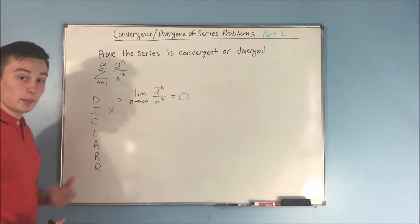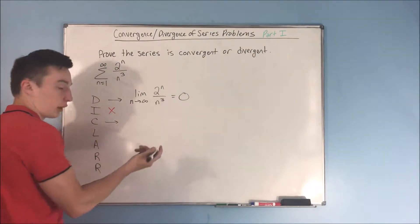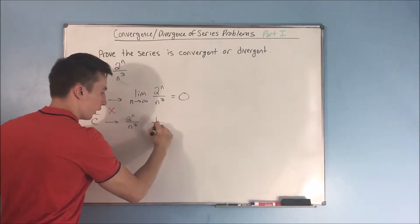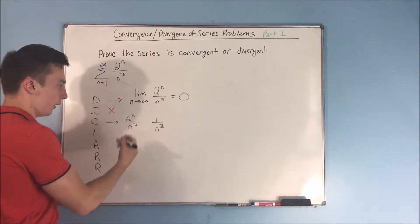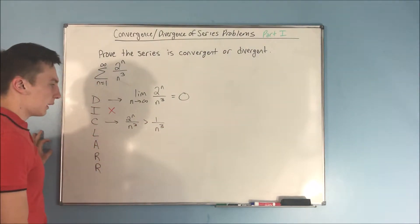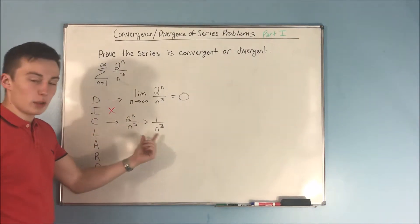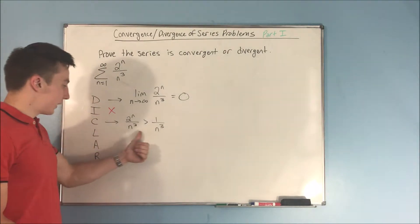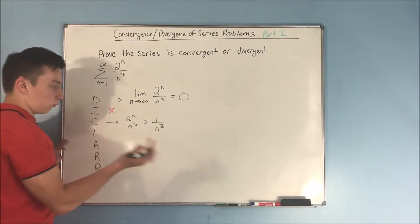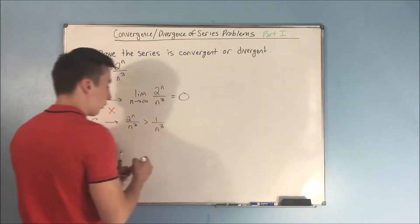Could we do a comparison test? If we were going to compare it to anything, it would be to the p-series 1 over n cubed. We have 2 to the n over n cubed compared to 1 over n cubed. Since the numerator of our series is greater, we get a greater-than sign. But we know the sum of 1 over n cubed converges, and being greater than a convergent series does nothing for us. So we can't do a direct comparison test.